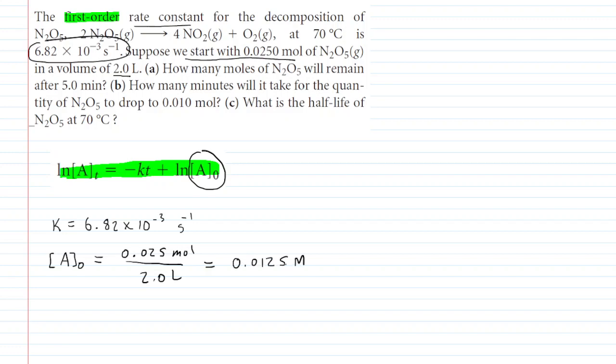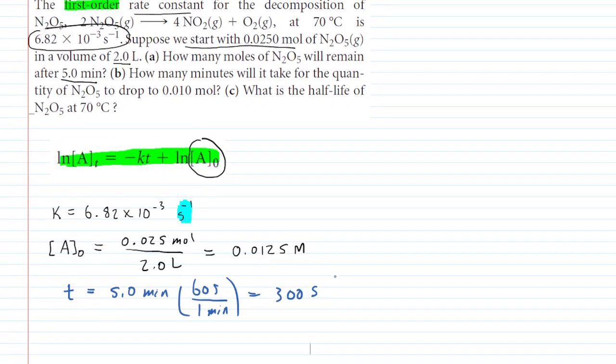So that's our initial concentration. We want to figure out how many moles of N2O5 are present after 5 minutes. Now looking at the units of the rate constant K, we can see that it is in terms of inverse seconds. So we definitely want to take that time and change it from minutes into seconds. To do that, we can just multiply by the fact that 1 minute is equal to 60 seconds. So the time will be 300 seconds. Just be careful to have consistent units for time.